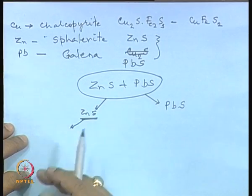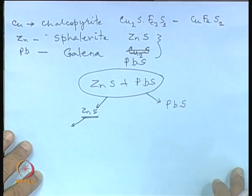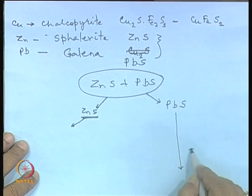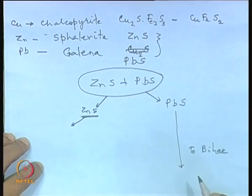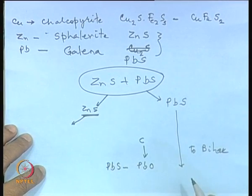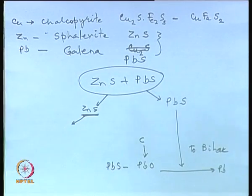The zinc concentrate goes to a zinc plant in Udaipur via a hydrometallurgical route: zinc sulphide is first roasted to zinc oxide, then dissolved in sulphuric acid, and from that acid solution, after proper purification, the solution is electrolyzed to get zinc. This cannot be done for lead sulphide. Instead, the lead sulphide comes all the way to a place called Tundu in Bihar, where it is roasted to PbO and then reduced by coke in a blast furnace to produce lead. So zinc sulphide is treated nearby while lead sulphide travels to Bihar because coke is needed there.